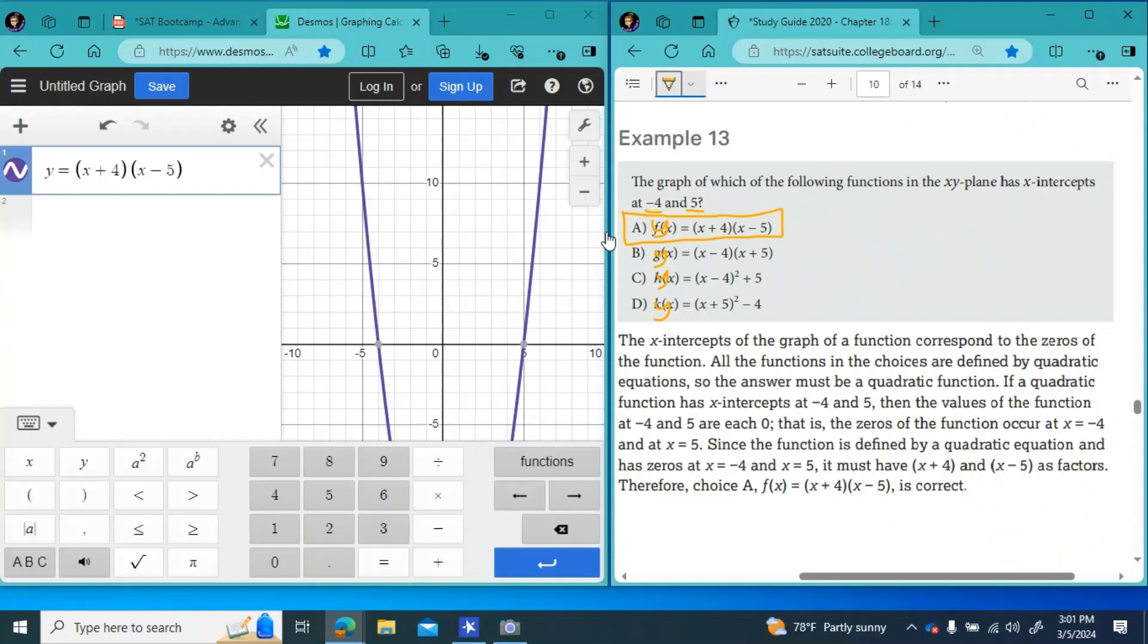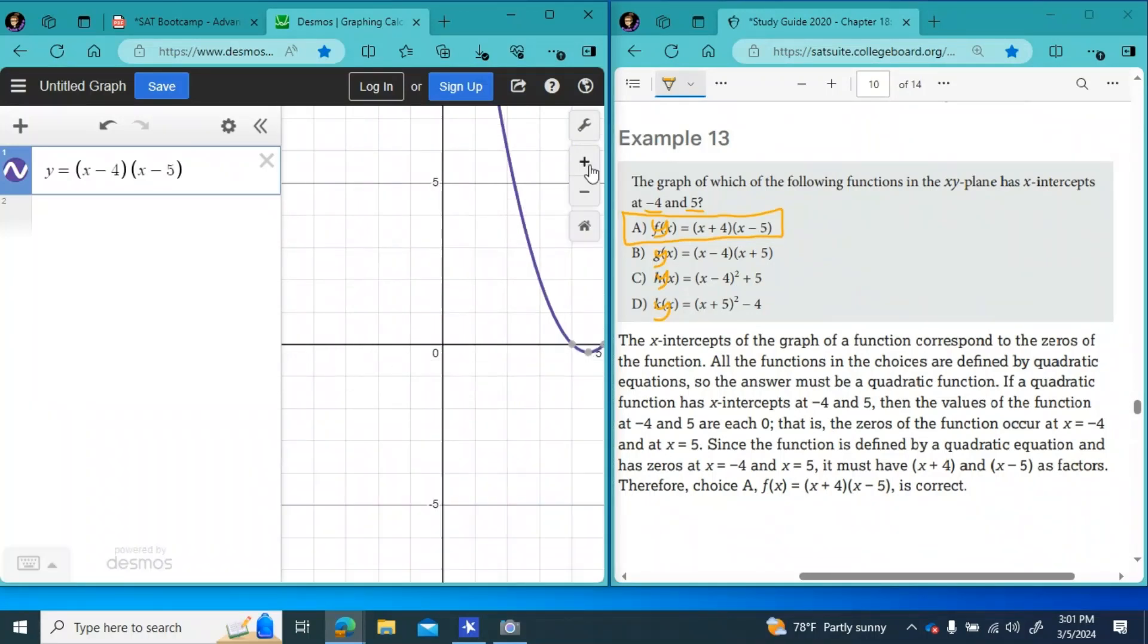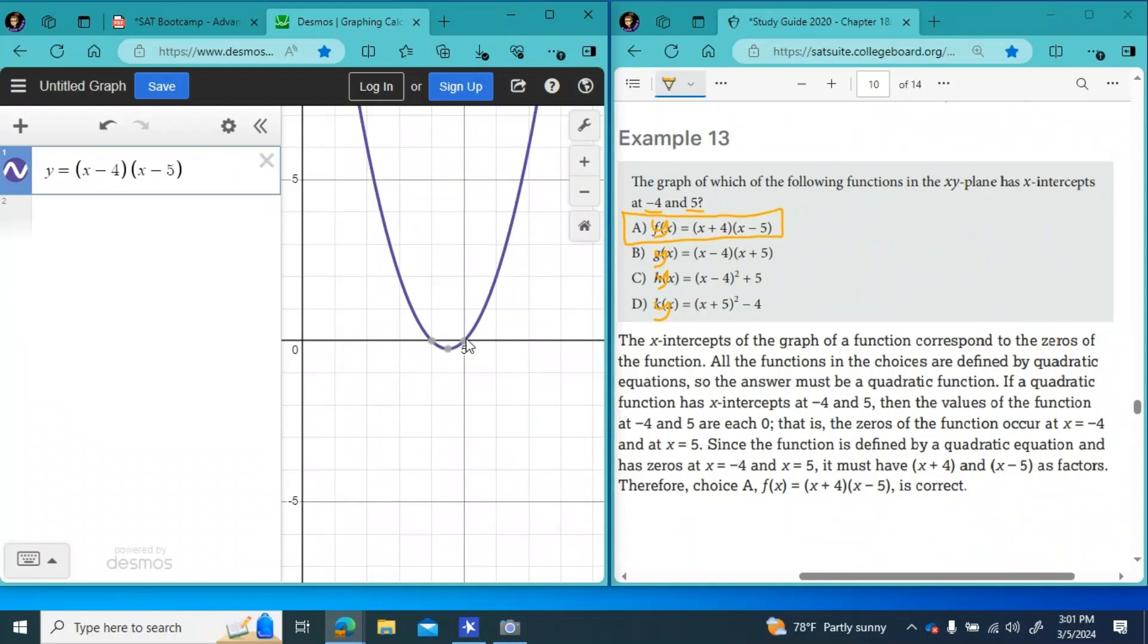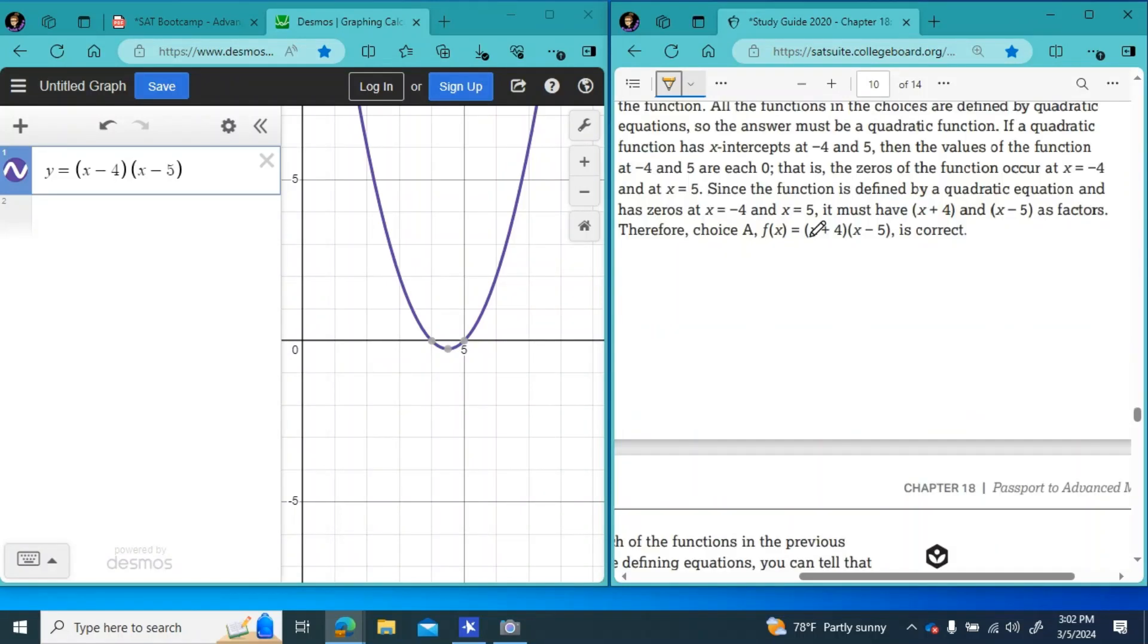And if you tried putting in answer choice B instead, this plus is a minus, right? It moves your x intercept to be positive 5 and negative 4. I'm sorry. Positive 5 and positive 4, not positive 5 and negative 4. So this would be incorrect. And if you went to check the other two, you would find that they would be incorrect as well. But while we have the answer, why are we going to spend more time?